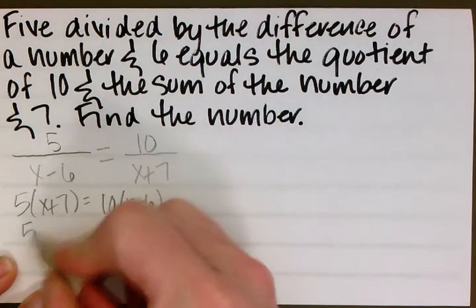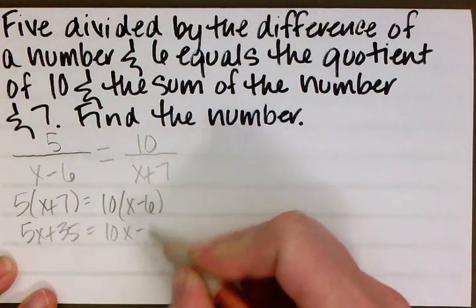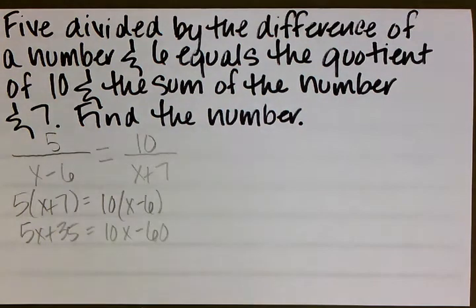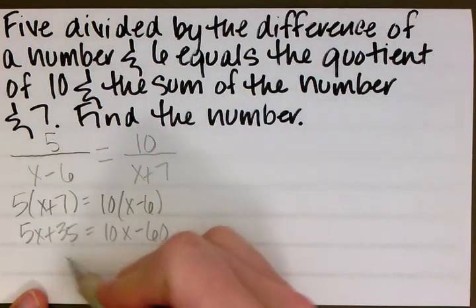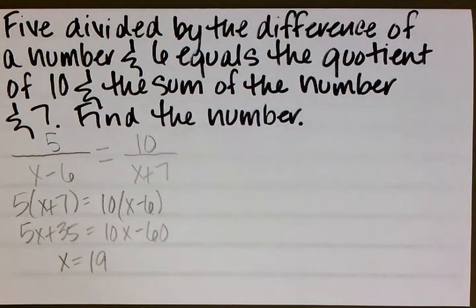This gives us 5x plus 35 equals 10x minus 60. When we solve, we get x equals 19. That is the answer.